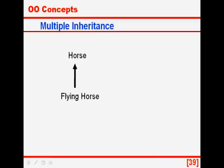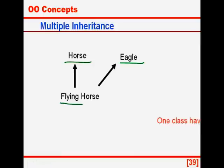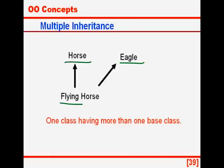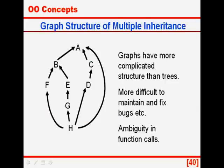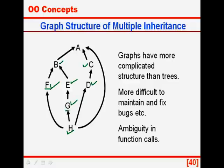Let us look at multiple inheritance. Suppose we have a class called horse and we need to create a flying horse. We can derive its functionality from two classes — a horse and an eagle — getting the functionality of a horse from horse and the functionality of flying from eagle. This leads to quicker code development. One class having more than one base class is known as multiple inheritance. When we have multiple inheritance the inheritance structure resembles a graph. Here we have class a from which we have derived classes b and c; class e is derived from b, class d derived from c, and g is derived from e and f is derived from f, g, d and a.